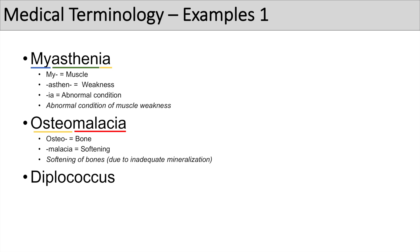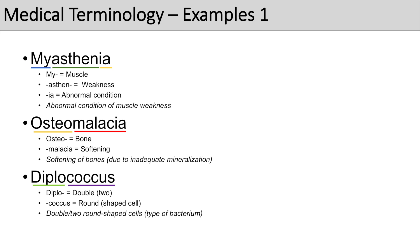The next practice word is diplococcus. Breaking it down: 'diplo' means double or two, and 'coccus' is a suffix that means round — specifically a round-shaped cell. So diplococcus means double or two round-shaped cells. Diplococcus is actually a type of bacteria.